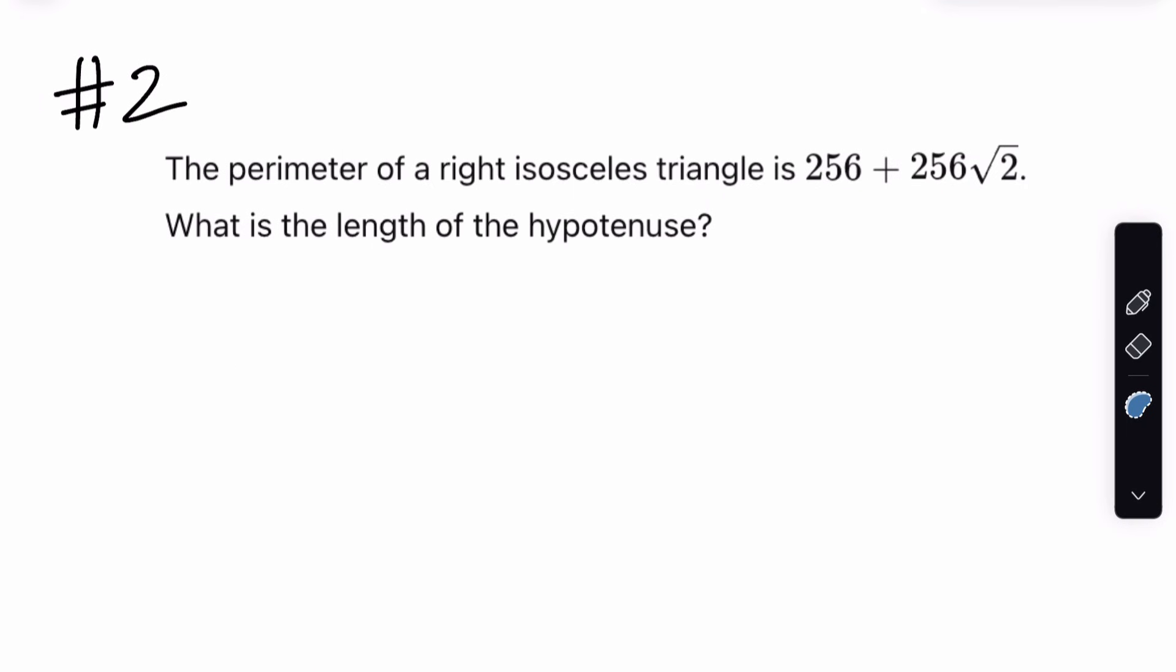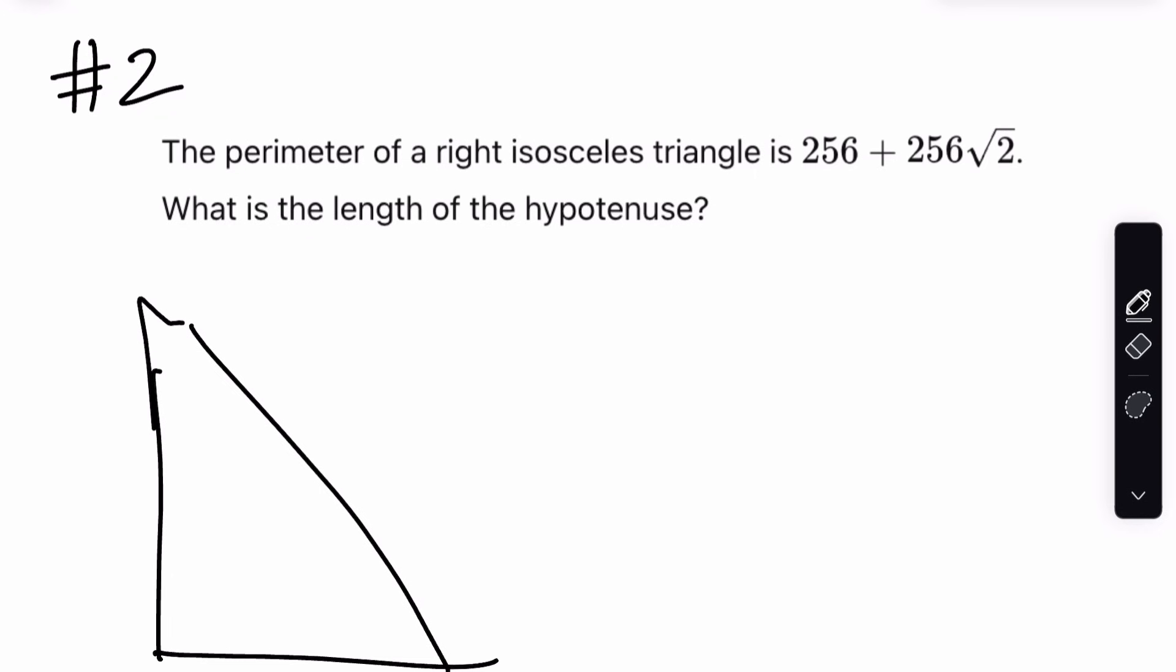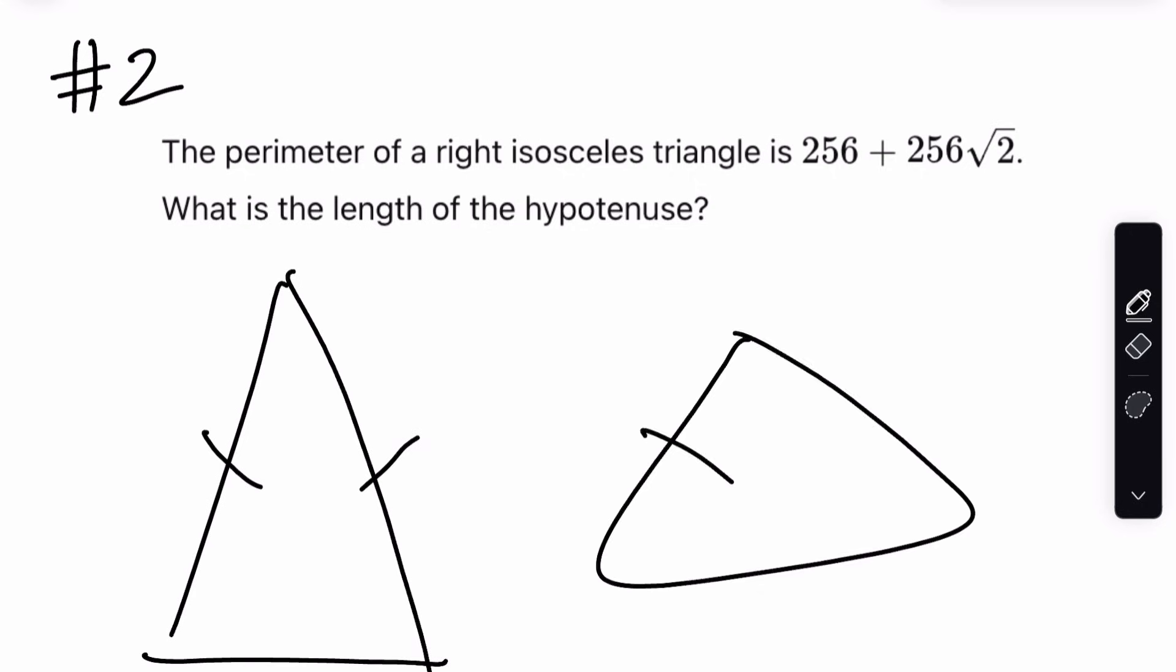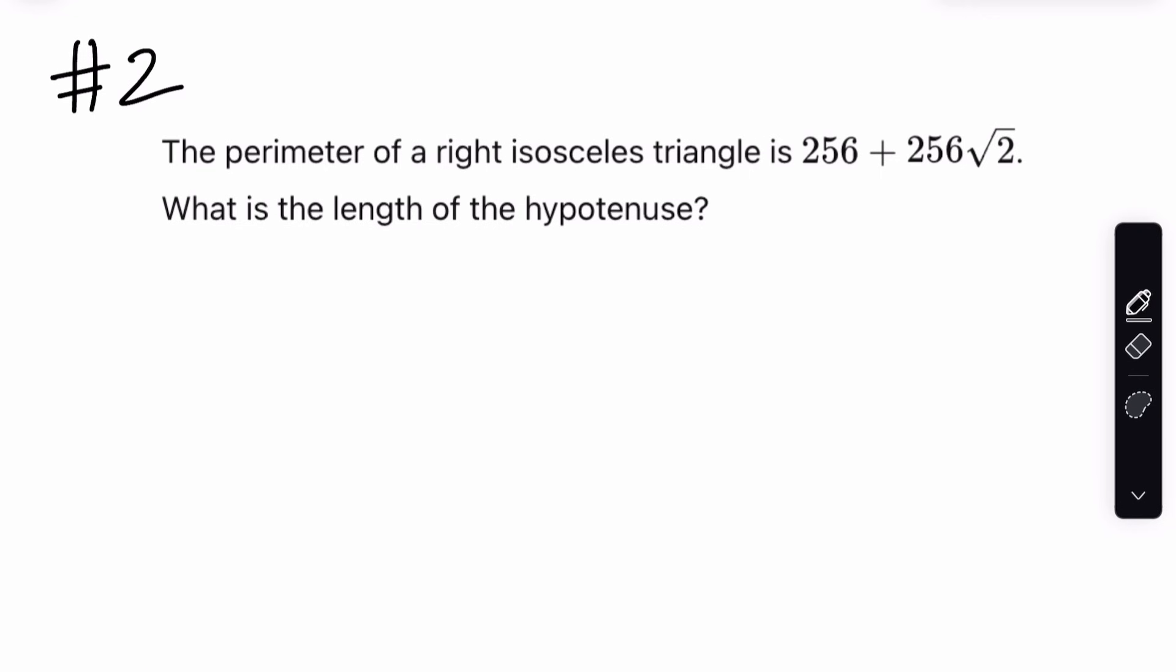Number two, the perimeter of a right isosceles triangle is 256 plus 256 root 2. What is the length of the hypotenuse? What even is a right isosceles triangle? First of all, let's start with an isosceles triangle. An isosceles triangle is a triangle with two sides that are the same. That's it. Meaning that an equilateral triangle is an isosceles triangle, but not all isosceles triangles are equilateral. Now, what does right isosceles triangle mean? Well, it just means a right triangle that has the same two sides. That's what you need to know for this question.